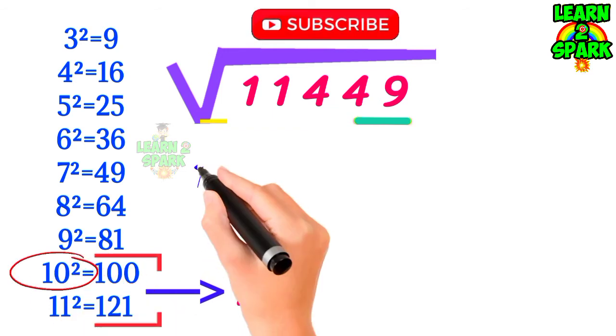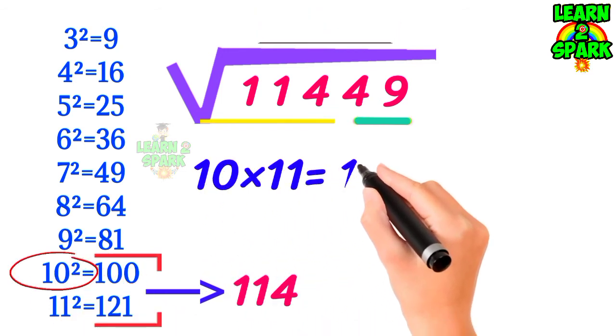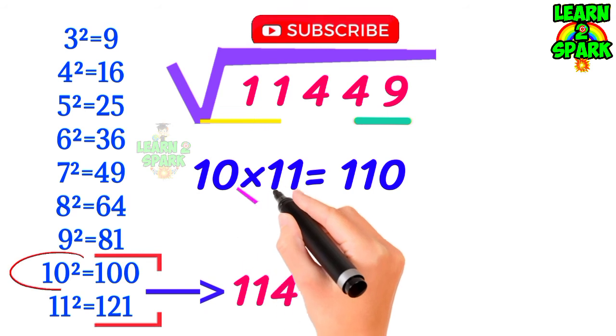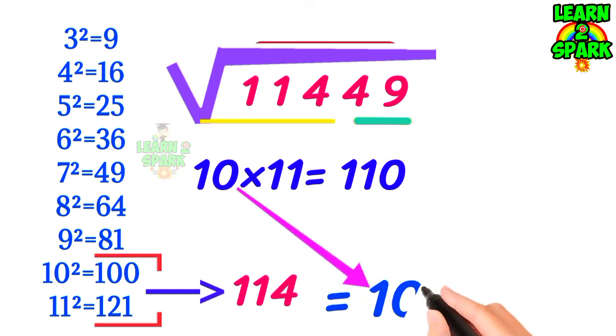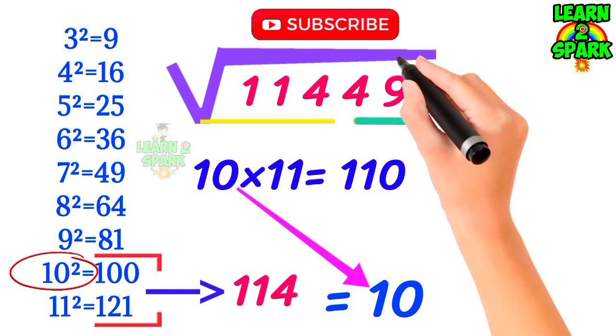Now consider the first group that contains 114 which comes under the perfect square numbers 100 and 121. Then find the roots of these two numbers, that is 10 and 11. Multiply them, you will get 110. Then bring down the smallest root, that is 10 here, for your final answer.